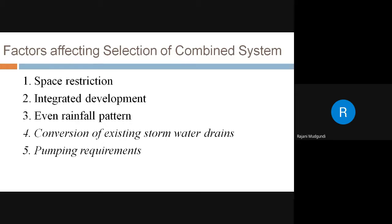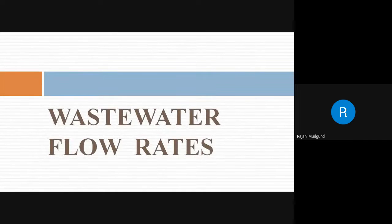With uniform runoff, during the driest period of the year when only dry weather flow — only sewage — is present, the sewer will have some flow; and during monsoon peak flows the sewer will run full. Conversion of existing storm water drains into sewers for carrying sewage is another consideration when new sewers are to be laid.